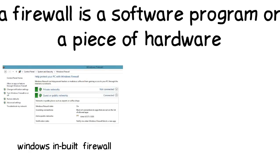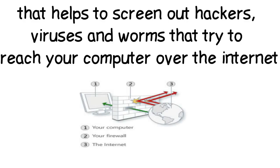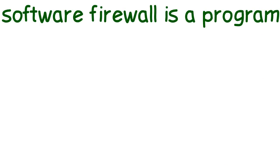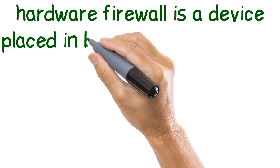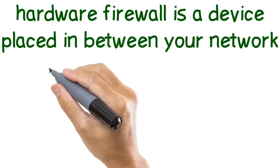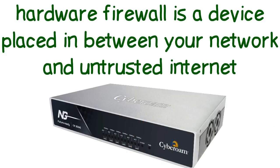A firewall is a software program or a piece of hardware that helps to screen out hackers, viruses and worms that try to reach your computer over the internet. A software firewall is a program that is installed on your PC. A hardware firewall is a device that is placed in between your network and the untrusted internet.